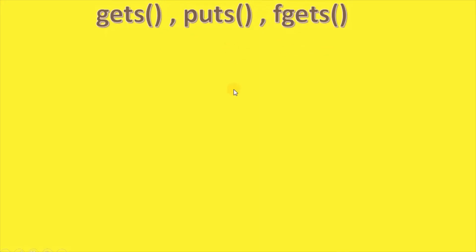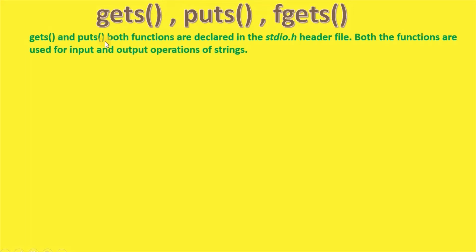gets, puts, and fgets — gets and puts are both declared in the stdio.h header file. Both functions are used for input and output operations of strings.